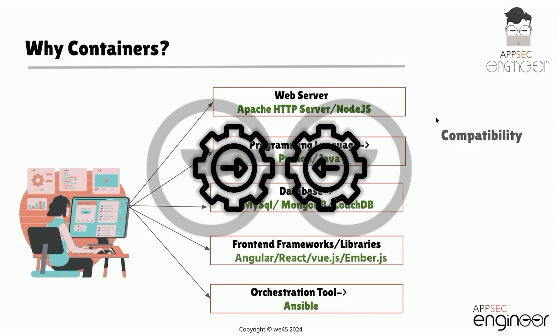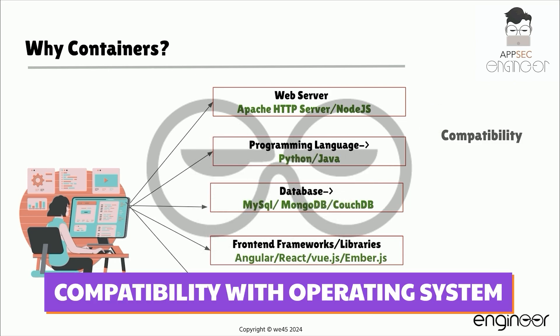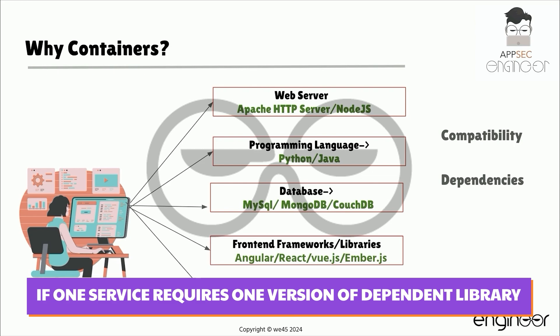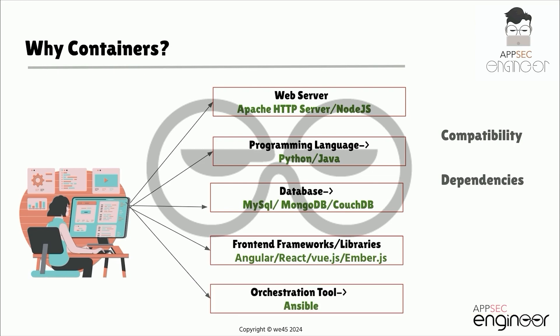First comes compatibility — compatibility with the underlying operating system. We have to ensure all the different services are compatible with the version of the OS we plan to use. There would be times where certain versions of these services are not compatible with the operating system, and we come back to square one, looking for another OS that is compatible. The second concern is dependencies — checking compatibility between services and their libraries, since one service may require one version of a dependent library while another service requires a different version.